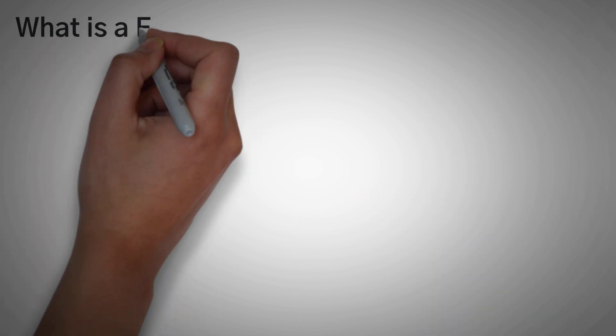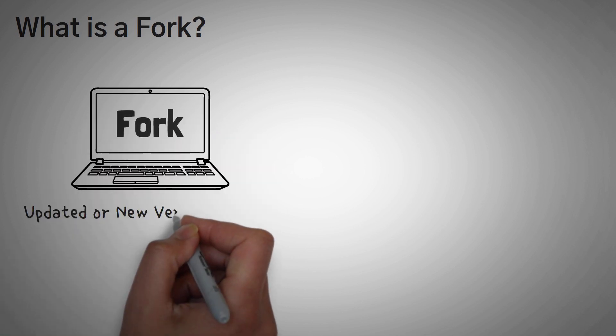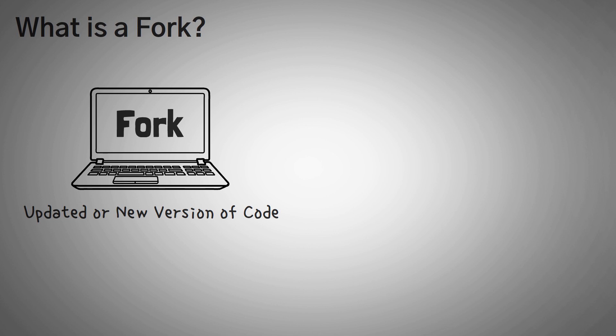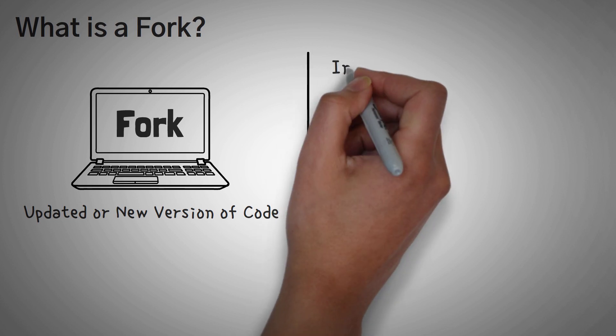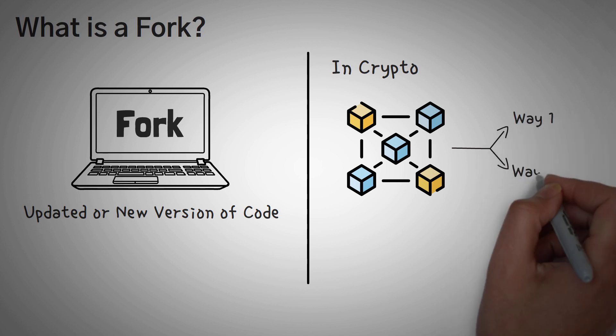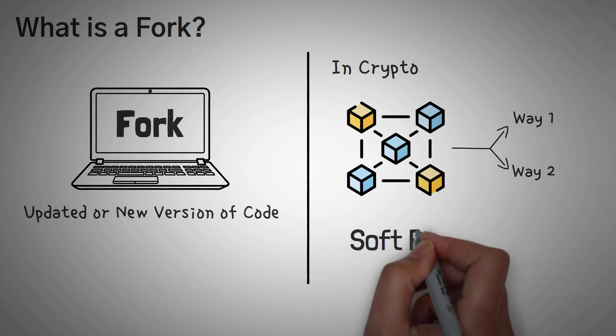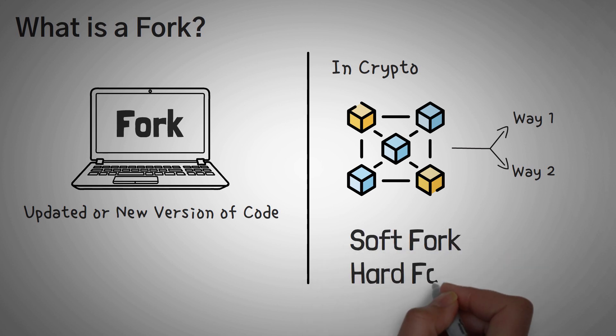First off, what is a fork? In the development world of programming, a fork is an updated or new version of code that is simply old code that has been changed a little bit. In the sense of crypto, a fork could refer to two potential ways that a blockchain could continue. It's basically a change in protocol. However, we can categorize these two forms of changes, soft forks and hard forks.